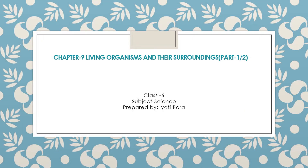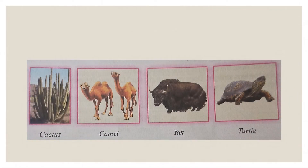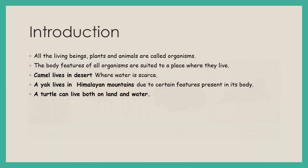Hello children. Today we will discuss chapter number 9. The name of the chapter is 'Living Organisms and Their Surroundings.' You can see in this picture different living organisms which includes plants as well as animals. Let us first understand what living organisms are.